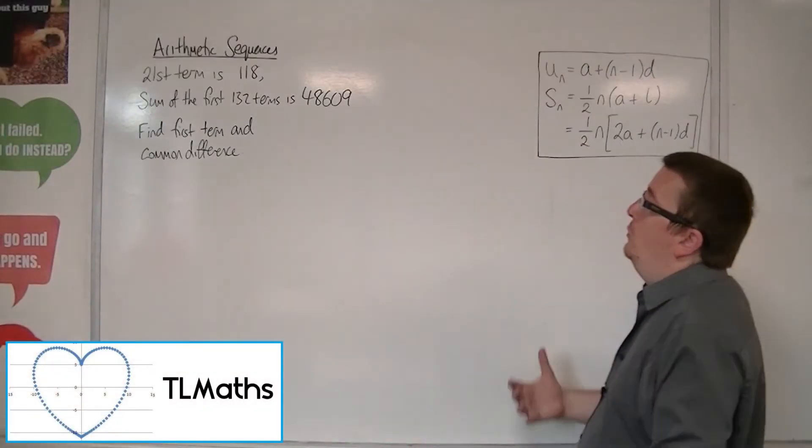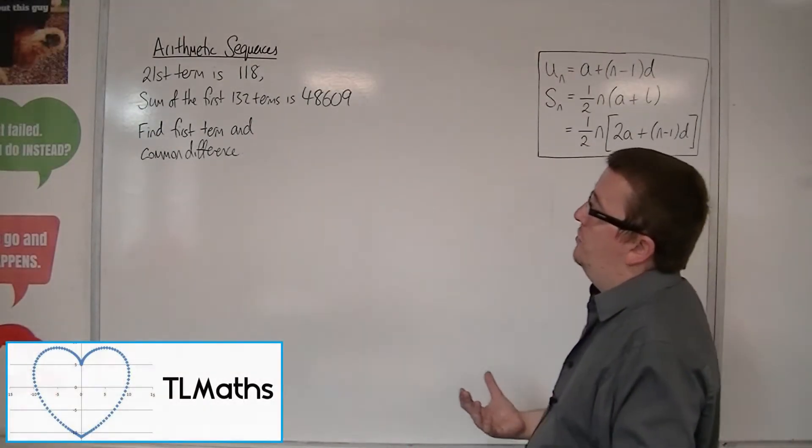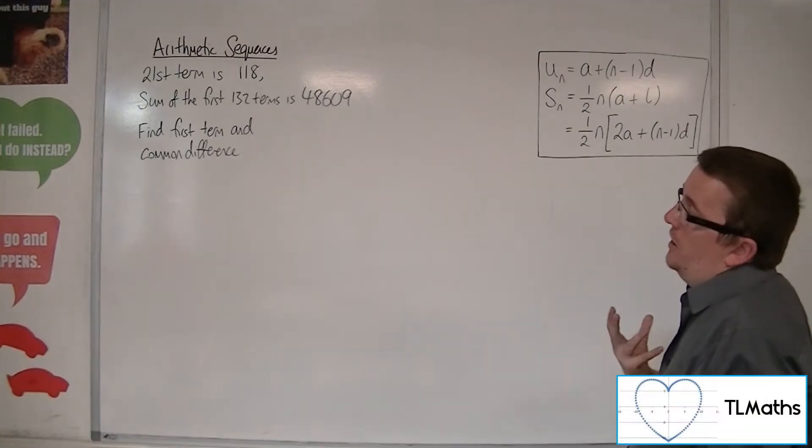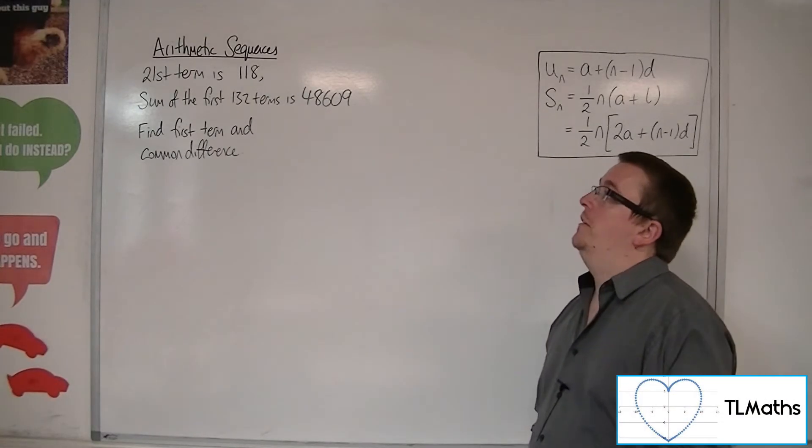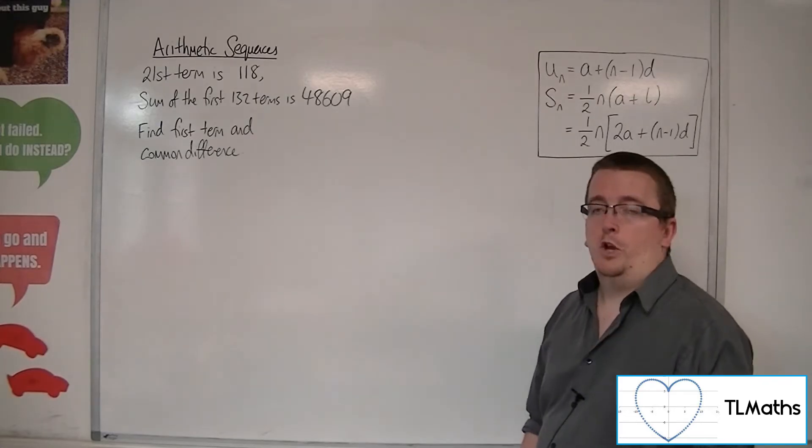So in this problem, we know that the 21st term is 118, the sum of the first 132 terms is 48,609, and we need to find the first term and the common difference.